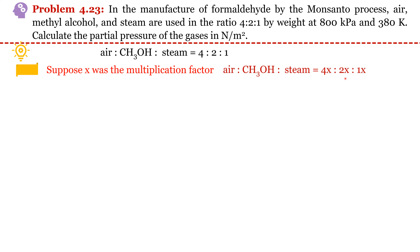After simplification we get 0.138x divided by 0.257x. The x cancels out, and since the total pressure is known, we can estimate the partial pressure of air: partial pressure of air equals (0.138/0.257) × 800 kPa, which comes out as 4.296 × 10⁵ N/m². Using the same formula and procedure, we can estimate the partial pressures of methyl alcohol and steam.